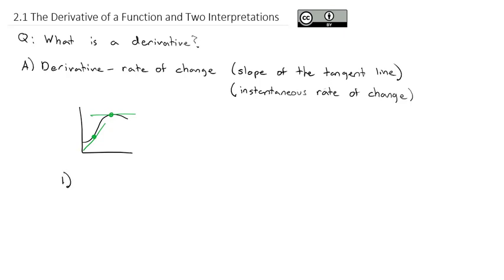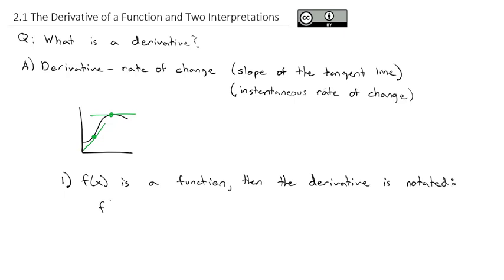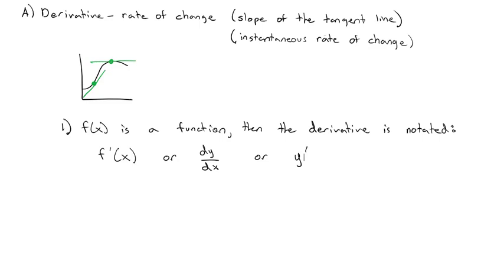There are a couple of ways that we notate what the derivative is, largely because calculus was developed by two mathematicians independently, and they both used different notations — both of which are still used today. So if f of x is a function, the derivative is notated as either f prime of x, or dy/dx, or sometimes we just put the prime on the y: y prime. That notation means we're interested in the derivative or the rate of change.